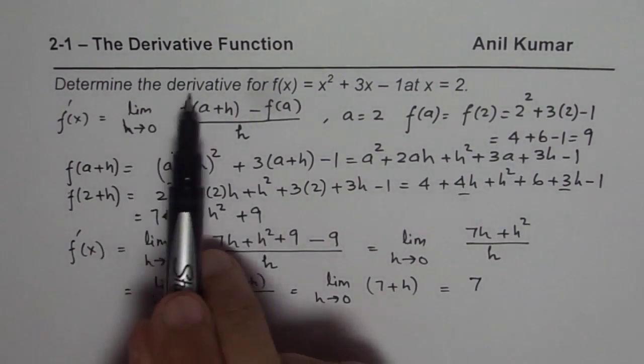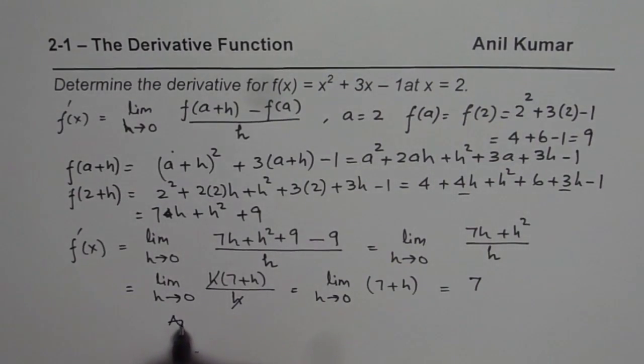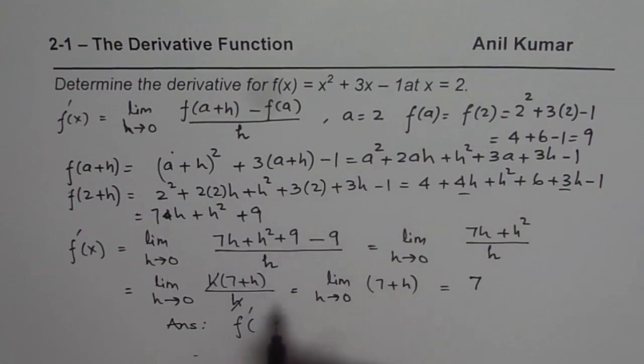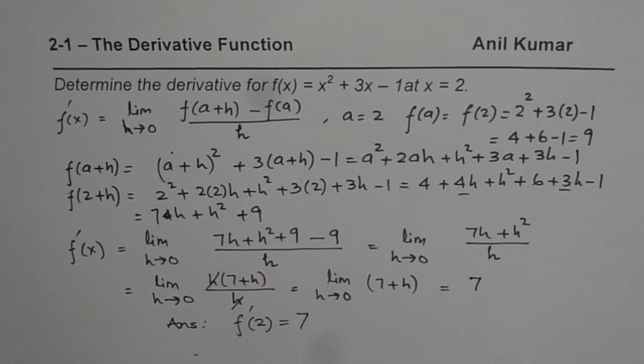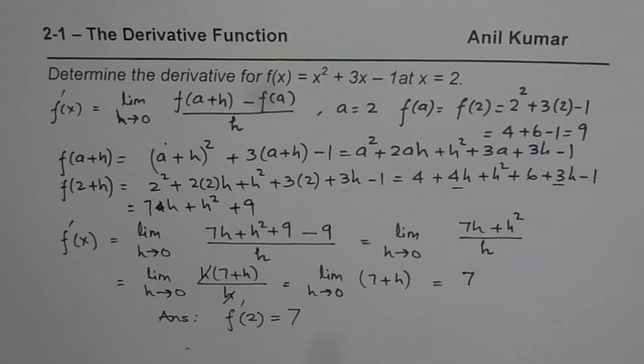Therefore, we can write derivative of this function at x equals to 2 is 7. So the answer is f dash, at 2, you can write within brackets, 2 is equals to 7. So that is how you could answer such questions. I hope the steps are absolutely clear. Thank you and all the best.